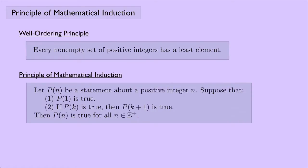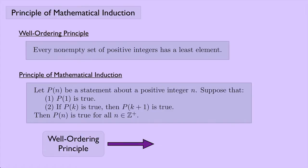The principle of mathematical induction says that if P(n) is a statement about a positive integer n, and we know that P(1) is true, and P(k) is true implies that P(k+1) is true, then we can say that P(n) is true for all positive integers n. We're going to assume the well-ordering principle is true and use that to prove the principle of mathematical induction.